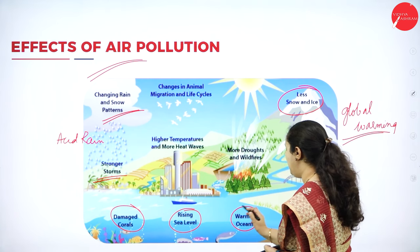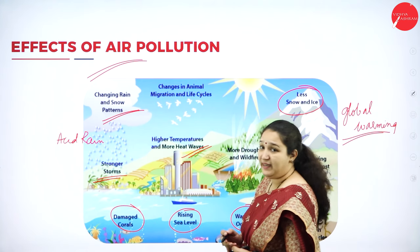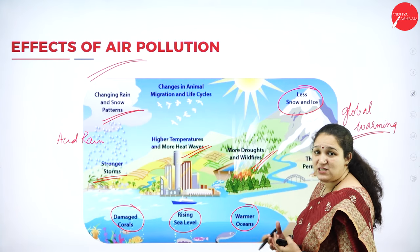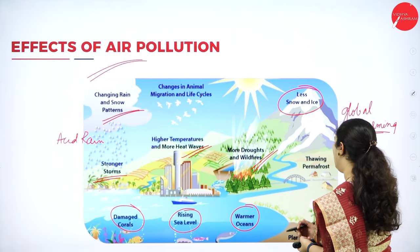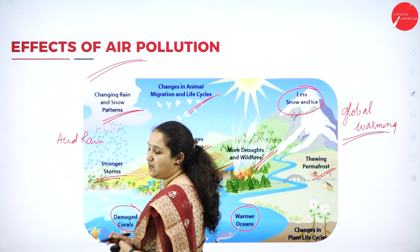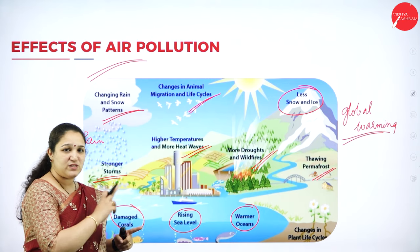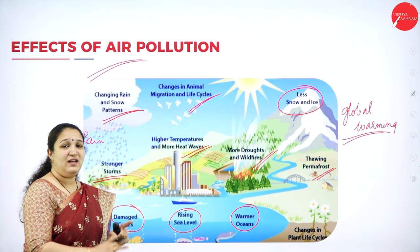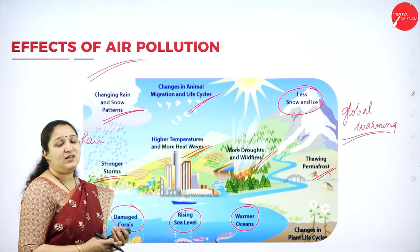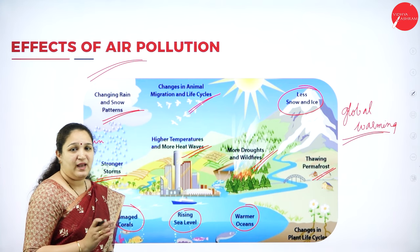Global warming also causes warmer oceans, higher temperatures, and more heat waves. There are more droughts and wildfires because of increased temperature. Thawing of permafrost can also happen, along with changes in animal migration and life cycles. Air pollution is the root cause of acid rain and global warming, and these give rise to all these environmental changes affecting wild animals, microorganisms, birds, and humans.